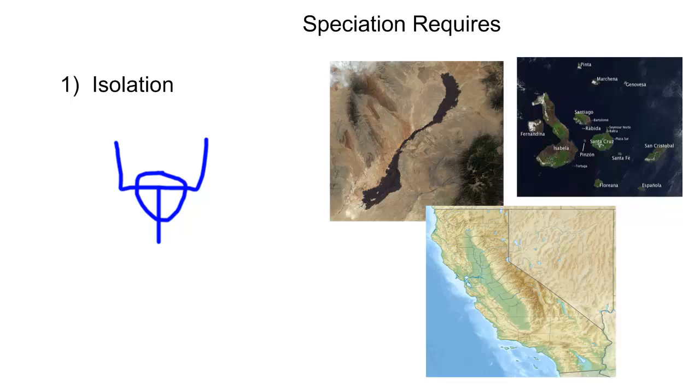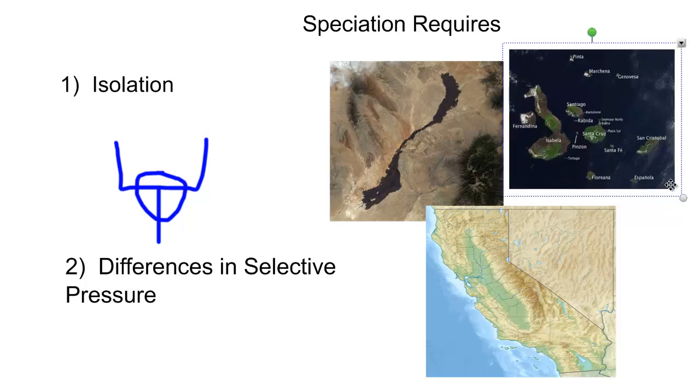The isolation allows the second thing to occur, which, if there's differences in selective pressure in the two different environments, then the organisms will become new species. So here's a picture of one of those lava flows from that example of the mice in the lava fields. Those mice have different selective pressures, the ones that live on the black lava compared to the ones that live on the yellow-tan soil surrounding it. They're isolated from each other by the sheer difference between the black lava and the tan lava, and so there's differences in selective pressures.